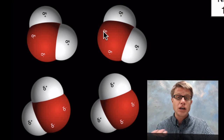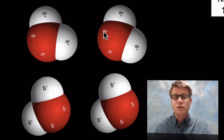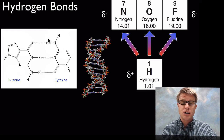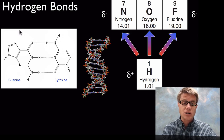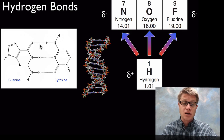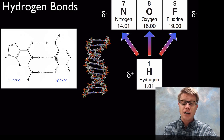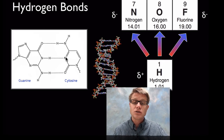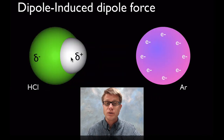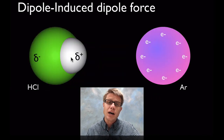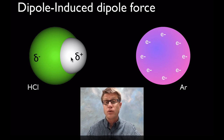Hydrogen bonds are incredibly important and allow small molecules like water to have strong bonds that hold them together. That's why it's really hard to change the temperature of water — it has a high specific heat due to these hydrogen bonds. We can find them in larger molecules as well. Looking at the nitrogenous bases on the inside of DNA, what's holding them together are hydrogen bonds — between hydrogen and oxygen, or hydrogen and nitrogen of another molecule. But again, they are dipole-dipole.